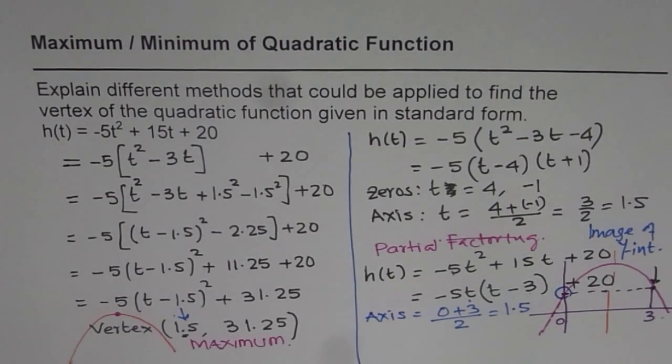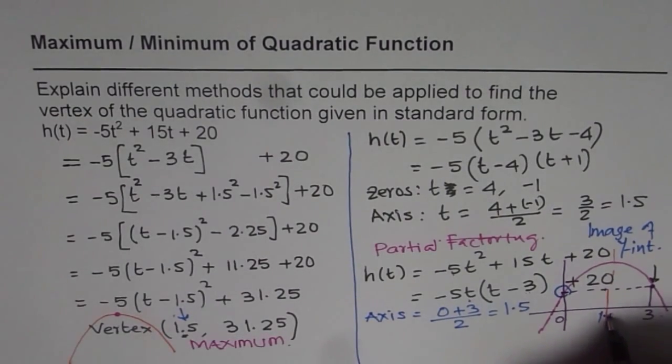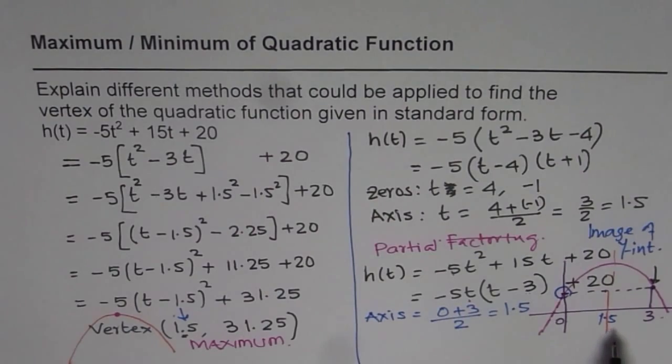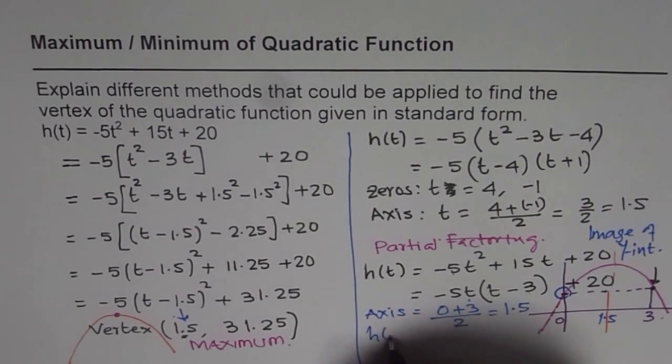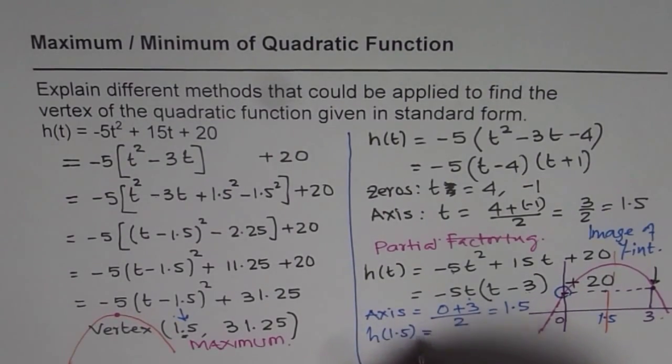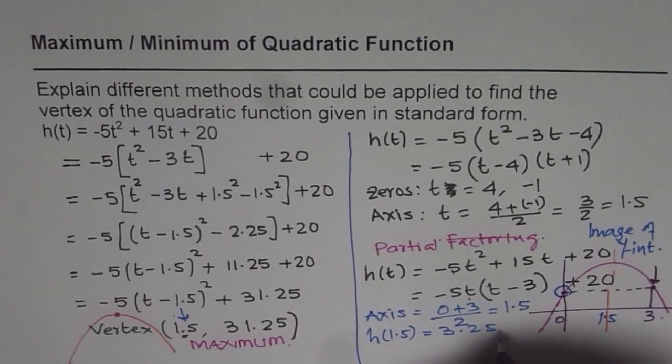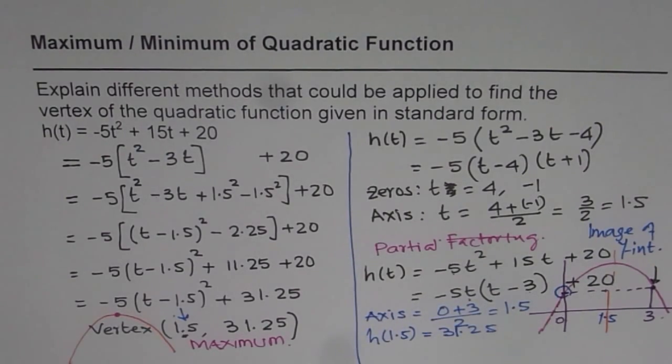So that is the third method. So once you find this value you can also substitute the value 1.5 in your equation h(t). And you know h(1.5) is indeed equals to 31.25. So you get maximum value of 31.25.